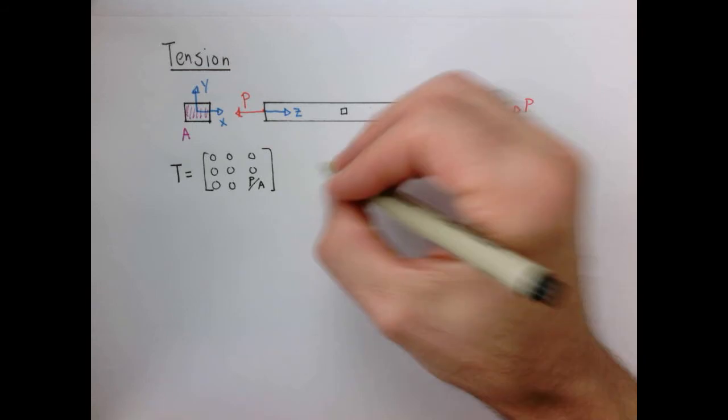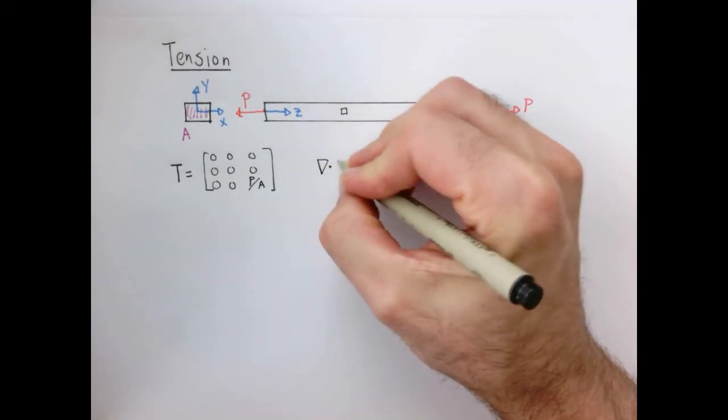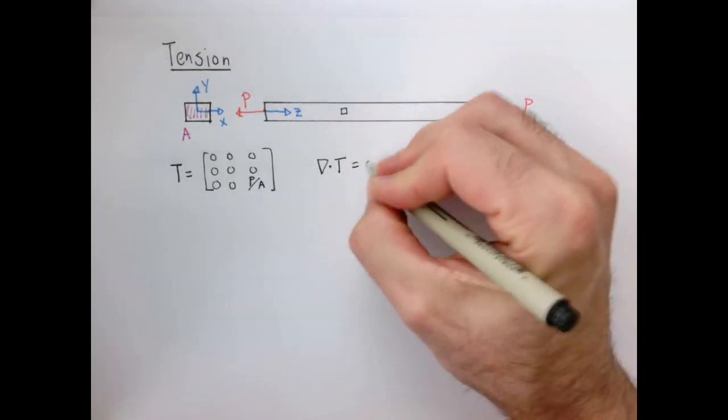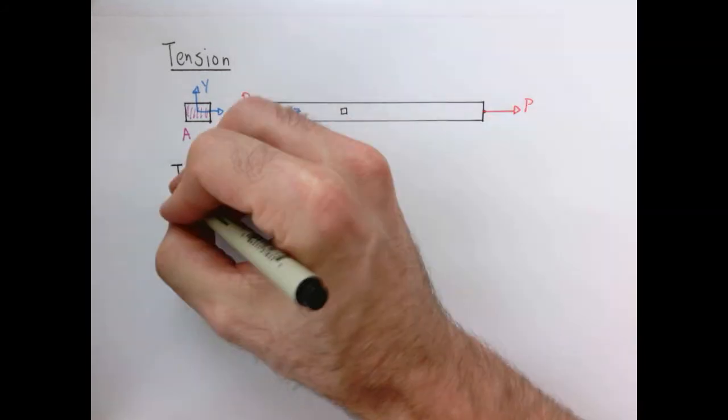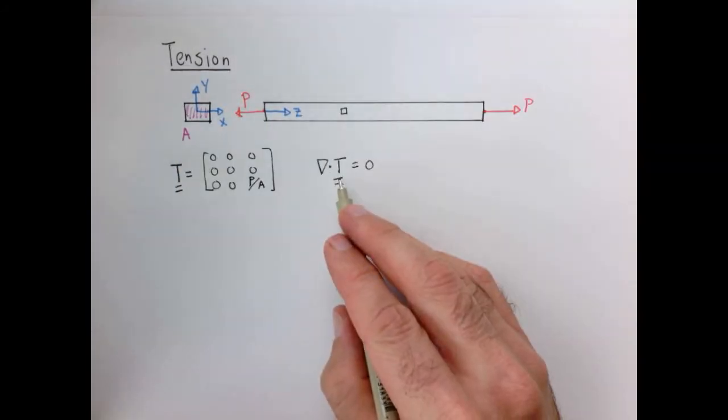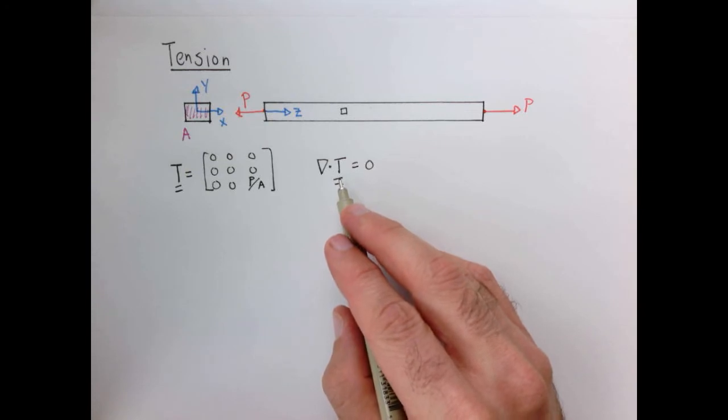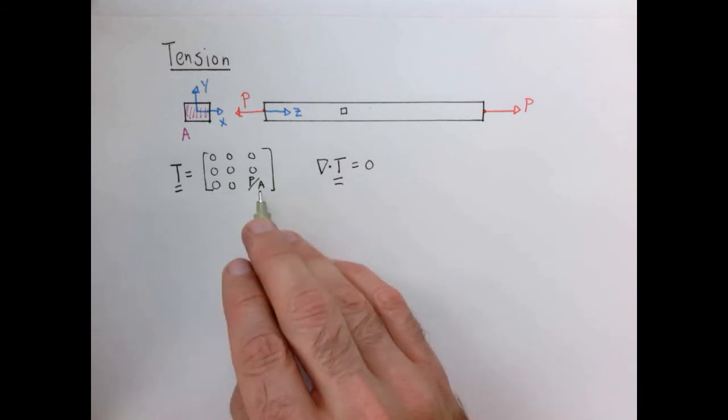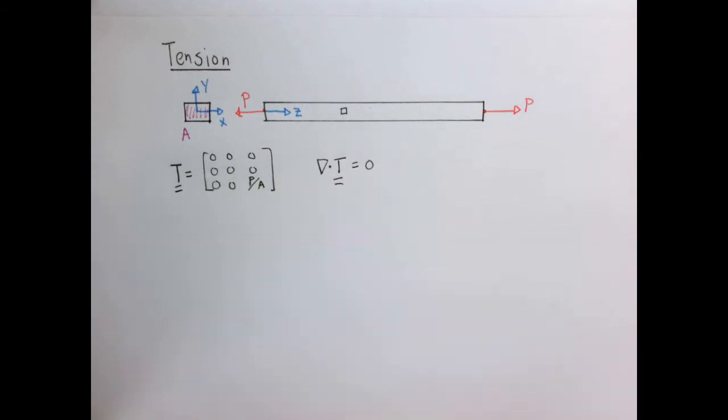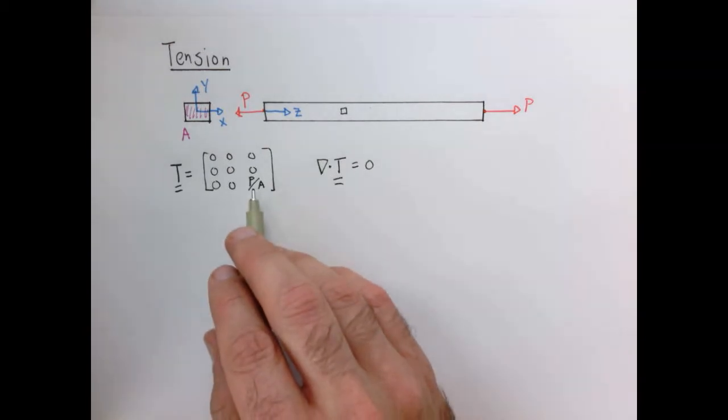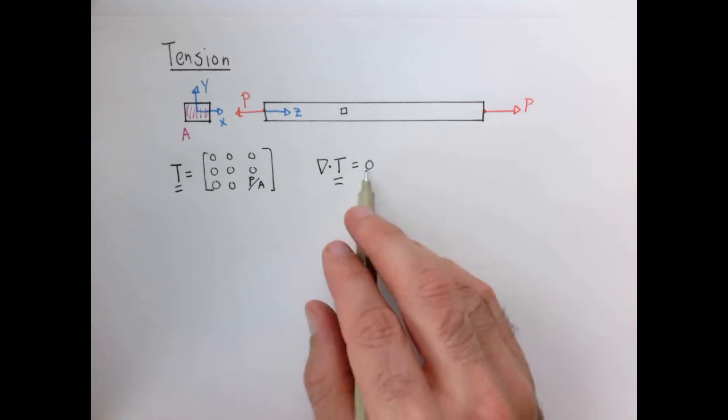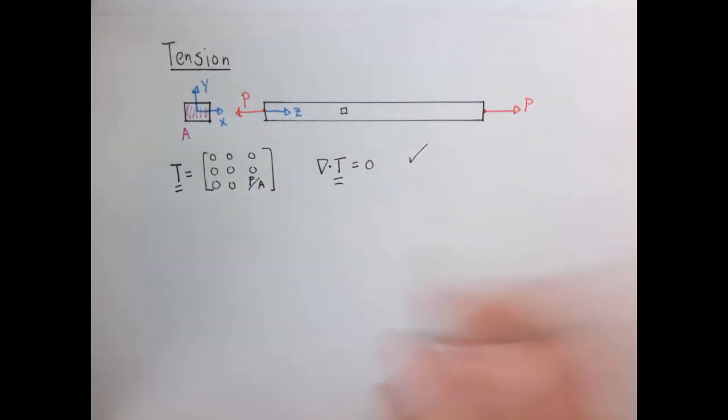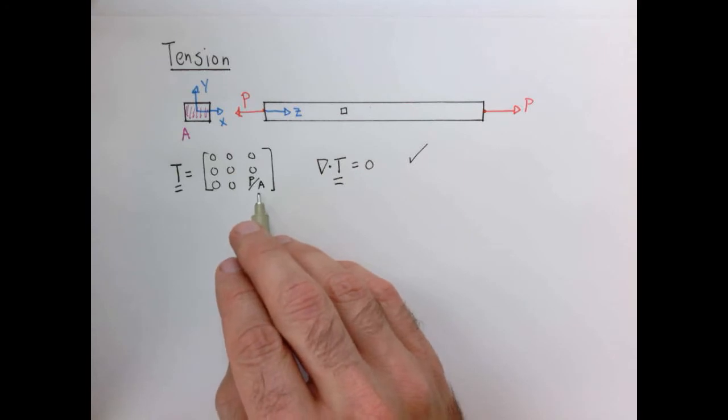So you remember our laws, which we wrote in a compact form as the divergence of the stress tensor has to equal zero. You remember that those laws were given as a bunch of partial derivatives. So we take the derivatives in the x, y, and z-direction of various components of this. But the main issue here is that this number is a constant. So if I take the derivative with respect to any coordinate direction, I'm going to satisfy this zero condition.